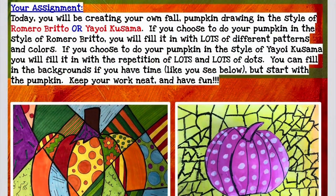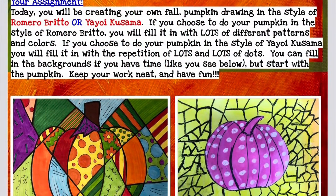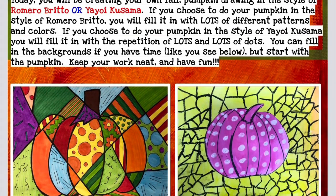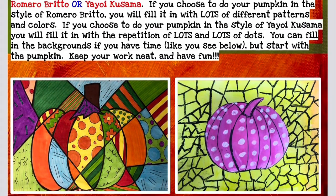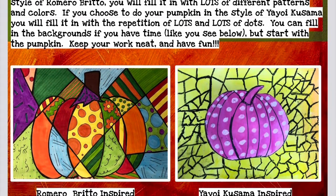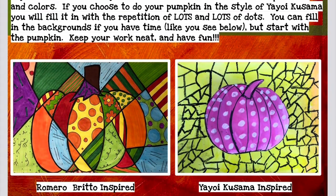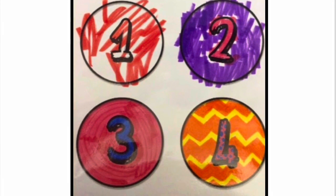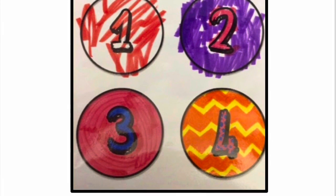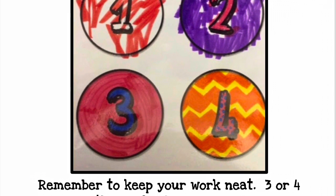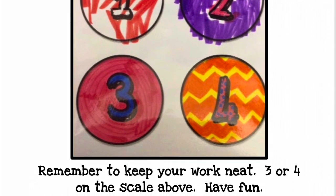Today you'll be creating a fall pumpkin drawing in the style of either Romero Britto or Yayoi Kusama. If you decide to do Romero Britto, you're going to fill it in with lots of patterns, lines, and shapes. If you're doing Yayoi Kusama, lots of dots. Remember to keep it neat — we don't want to attack it with our marker or crayon. Go slow and keep it on a three to four scale. Have fun, I'm excited to see all of your work!